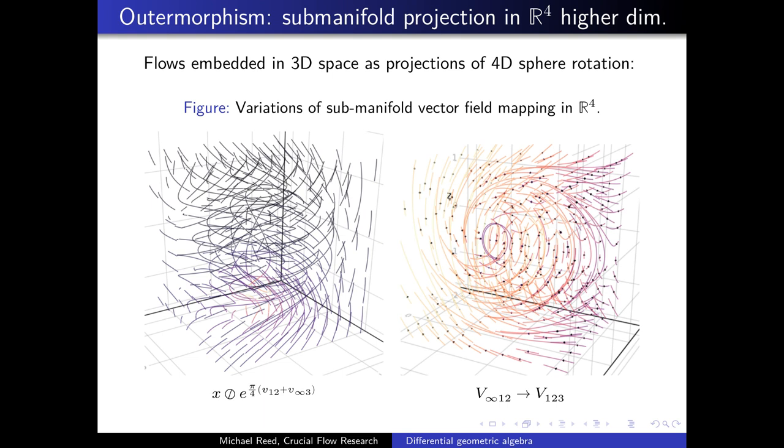Now here we observe the automorphism of a submanifold projection in the higher dimensional space. Here we see a flow embedded in a three-dimensional space, which is projected from a four-dimensional sphere rotation. For the same exponential, we have different projections that take the four-dimensional rotation back into a three-dimensional space.